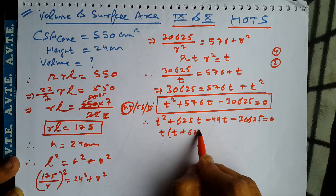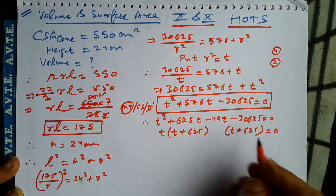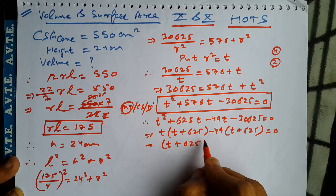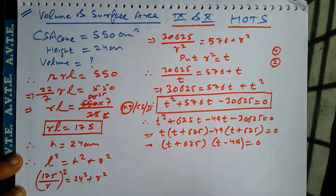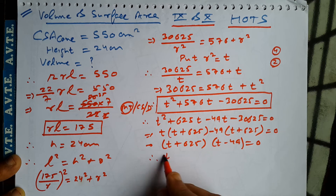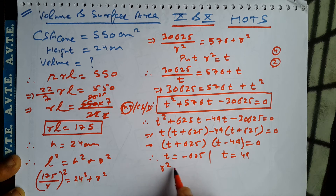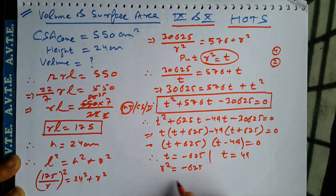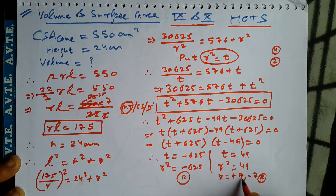So it is T into T plus 625, minus 49 into T plus 625. That gives us T plus 625 and T minus 49 equal to 0. The product of two factors is 0, so either of them is 0. The value of T is minus 625 — rejected, since T is R square. And R square equals 49, so R is plus 7 or minus 7. Minus 7 is rejected, we take plus 7.